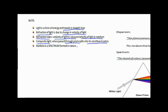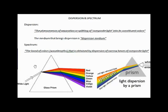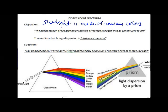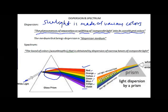Newton experimentally showed that sunlight is made up of various colors. When a narrow beam of sunlight is made to pass through a triangular glass prism, the rays spread into a band of colors. The colors seen by the splitting of this composite narrow beam of light are the same as those of a rainbow — with red at one end and violet at the other. In between, we can see violet, indigo, blue, green, yellow, orange, and red.